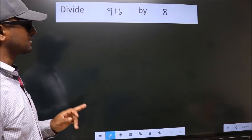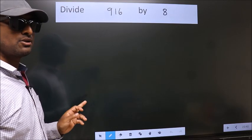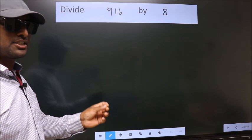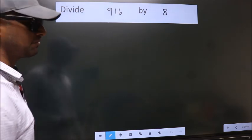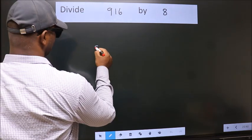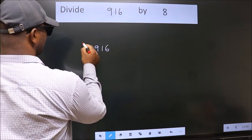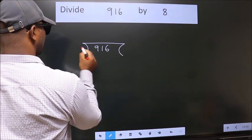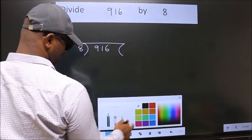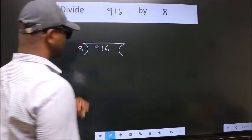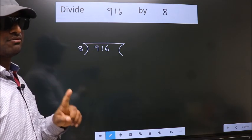Divide 916 by 8. To do this division, we should frame it in this way. 916 here, 8 here. This is your step 1.